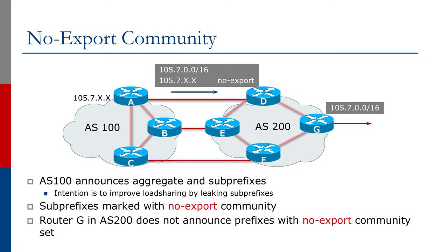We'll now look at the noexport community. The noexport community tells the neighboring AS not to announce this prefix to any other autonomous system. It's most commonly used in load balancing situations when you're multi-homing with a neighboring AS. The example here has three links between AS100 and AS200. The traditional way of multi-homing is to announce the aggregate on all three links, as well as announce three subnets of the aggregate — one on each link. The subnets we announce with the noexport community, telling AS200 not to announce the subnets to the wider internet.